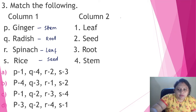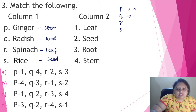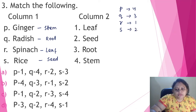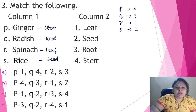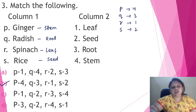So how to match them? Ginger (P) — stem is present in option 4. Radish (Q) — root is present in option 3. Spinach (R) — leaf is present in option 1. Rice (S) — seed is present in option 2. So P4, Q3, R1, S2. This is present in option B, so option B is the correct answer.